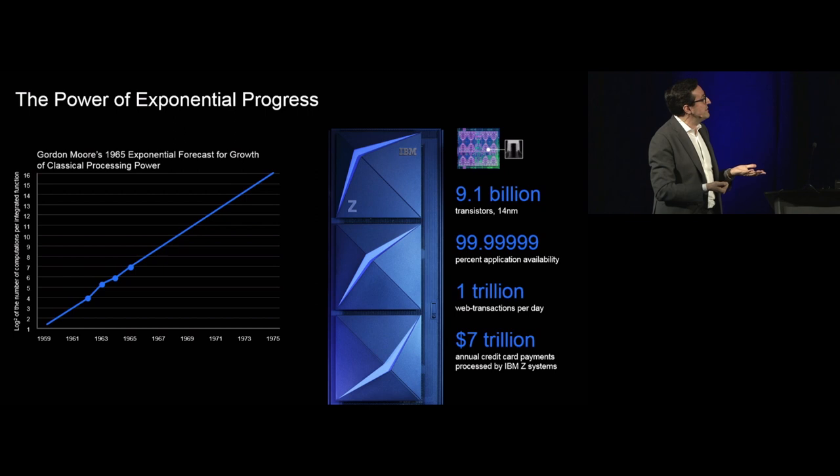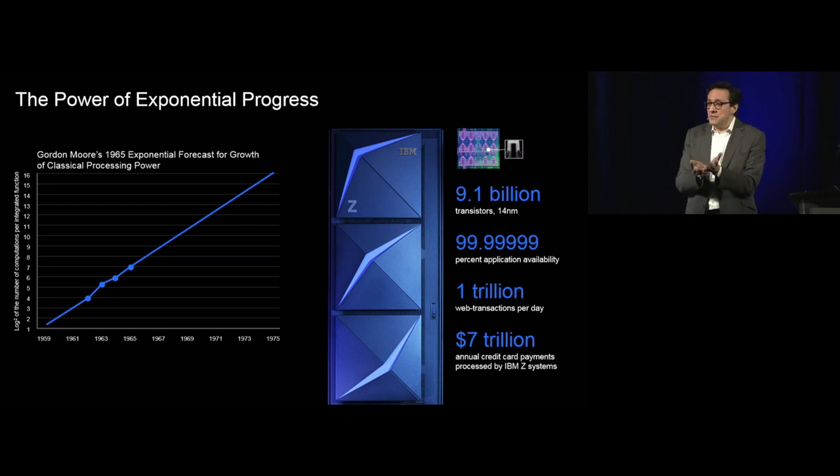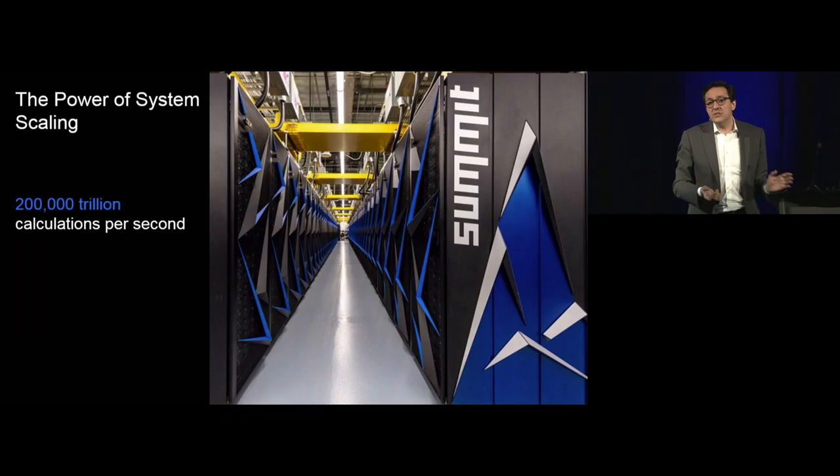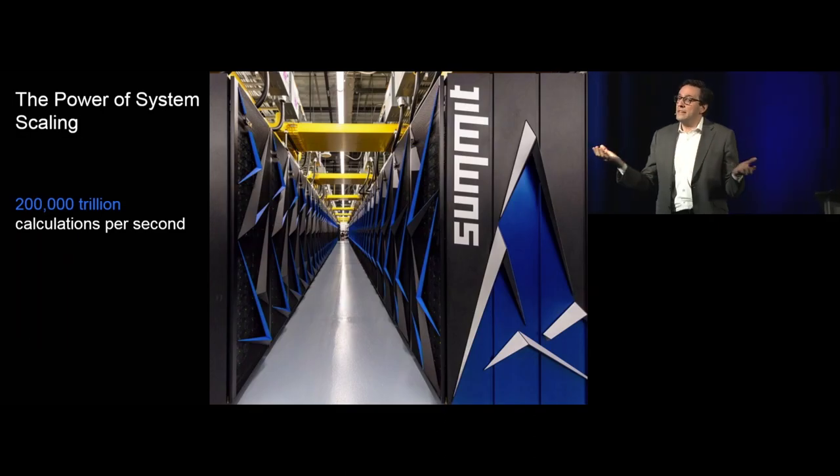You can engineer systems now where a single machine can have seven nines of reliability, where the average amount of unplanned downtime in a year is three seconds. A single machine can process over a trillion web transactions per day to give a flavor.